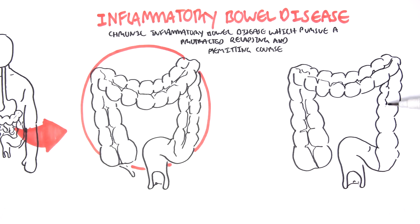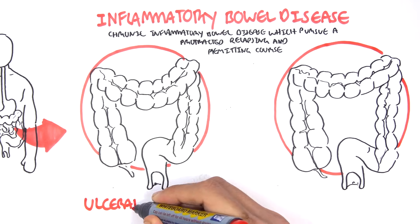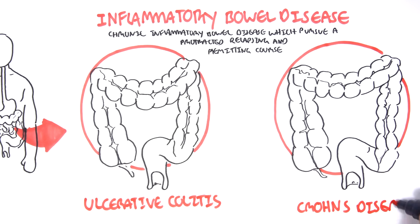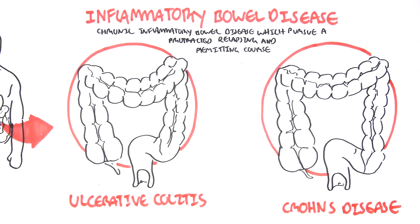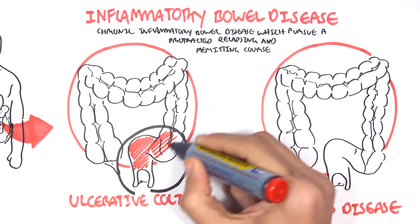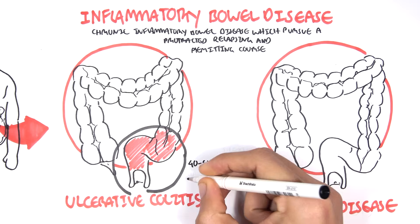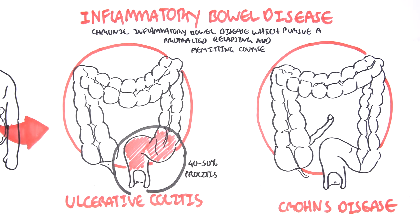The two types of IBD are ulcerative colitis and Crohn's disease. Ulcerative colitis mainly presents with inflammation of the rectal and sigmoid colon — about 40% to 50% of cases — and this is referred to as proctitis.